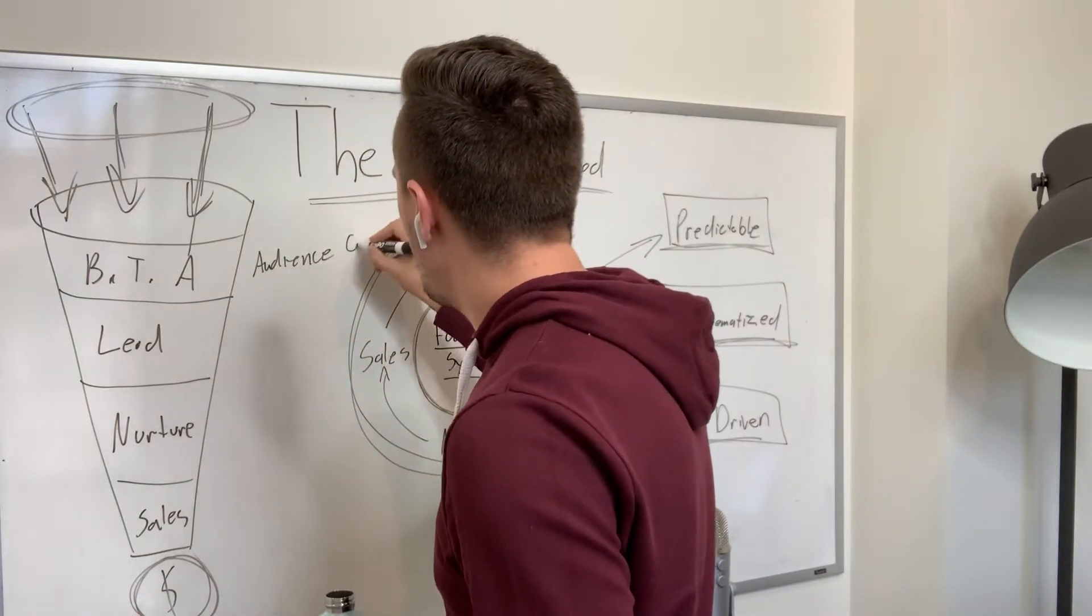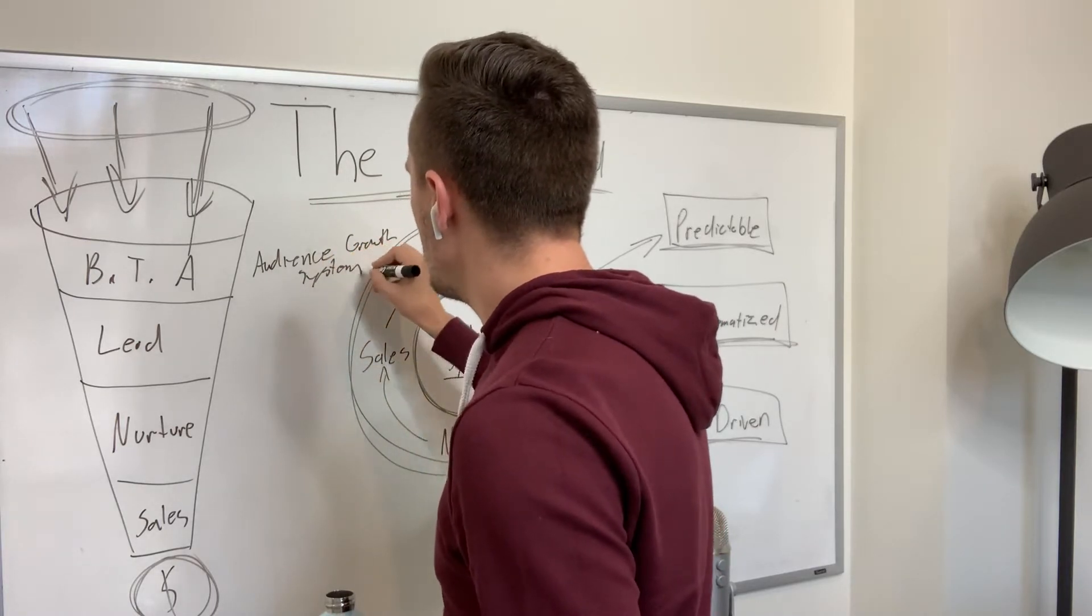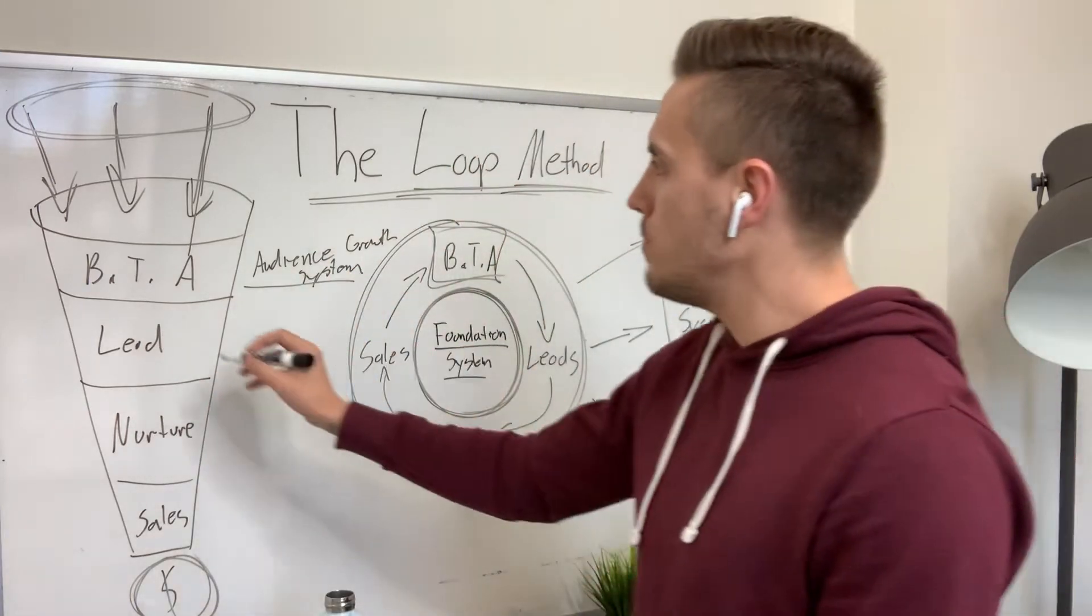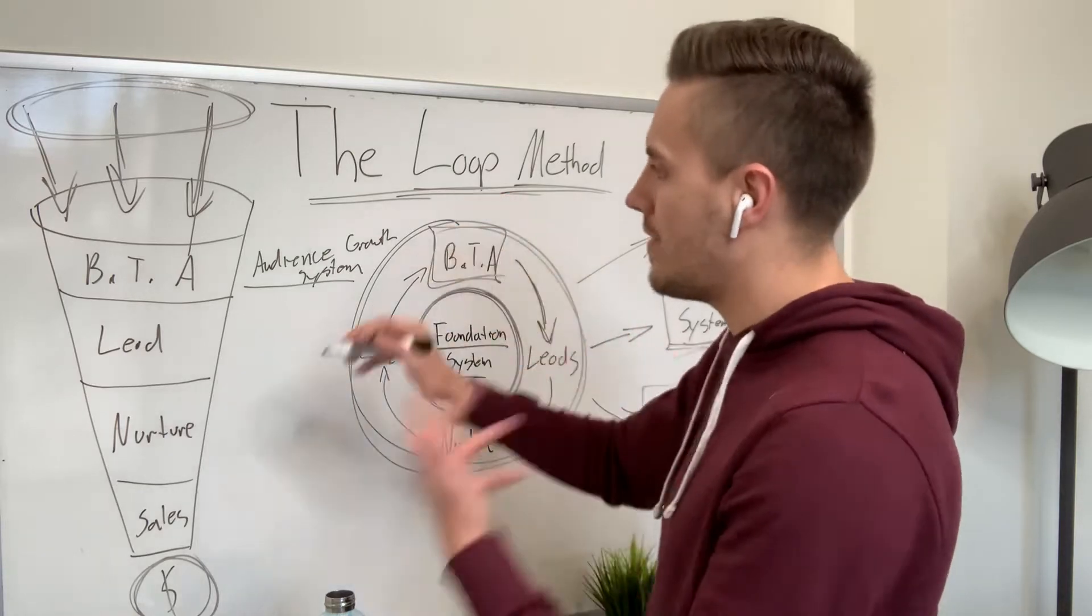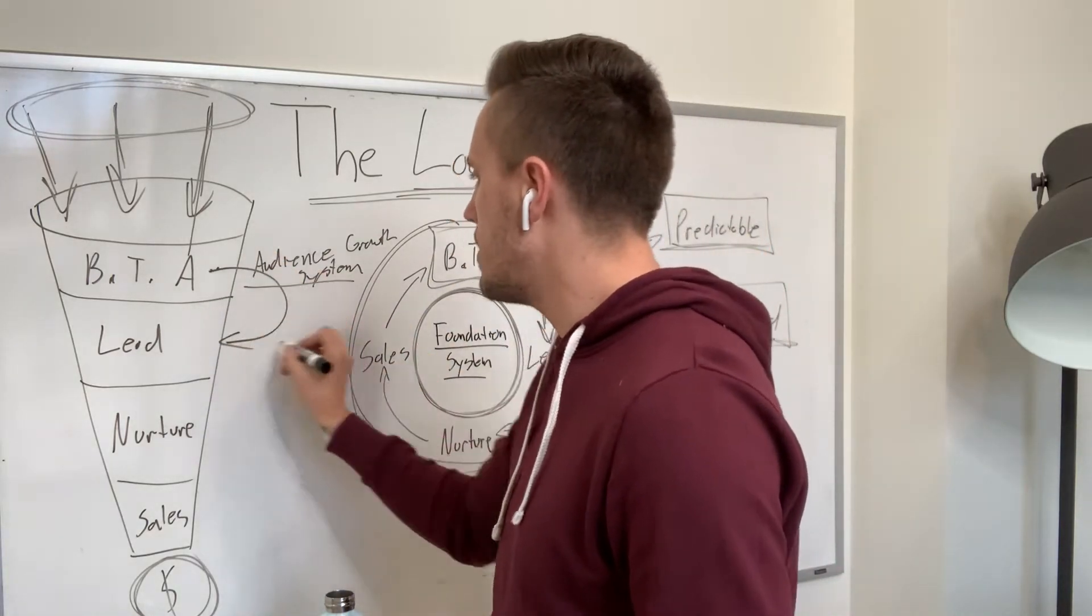How do we have an audience growth system? So this is a system that you need to learn in order to do this step. The second step is how do we take people who are in our audience and get them to become a lead? How do we get them to make that decision to go from this stage to the next stage, to becoming a lead?